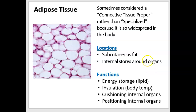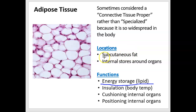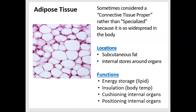Adipose tissue — sometimes people put it into connective tissue proper because it is so widespread. Like loose connective tissue surrounding organs, you will find adipose surrounding almost every organ as well. I've chosen to put it into specialized connective tissue due to one of its functions: it stores lipid. The lipid is in a vacuole that makes the cell look clear, which is why the cells look white.